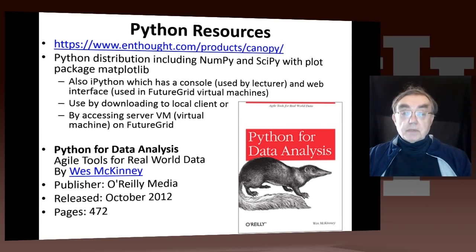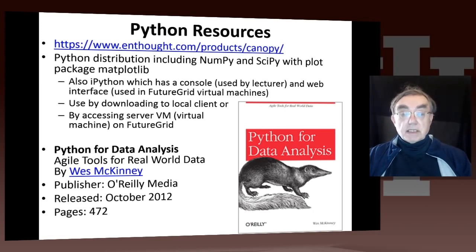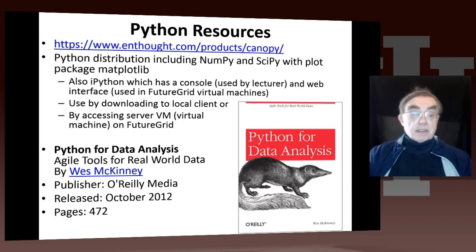So you can either download to your local client — here's the nThought website with the Canopy product — or you can access the same software on a cloud server on the FutureGrid facility. If you want more detail, which is outside the scope of this course, you can read the book Python for Data Analysis. That's probably already out of date — it's from 2012 — but it's a pretty reasonable book.